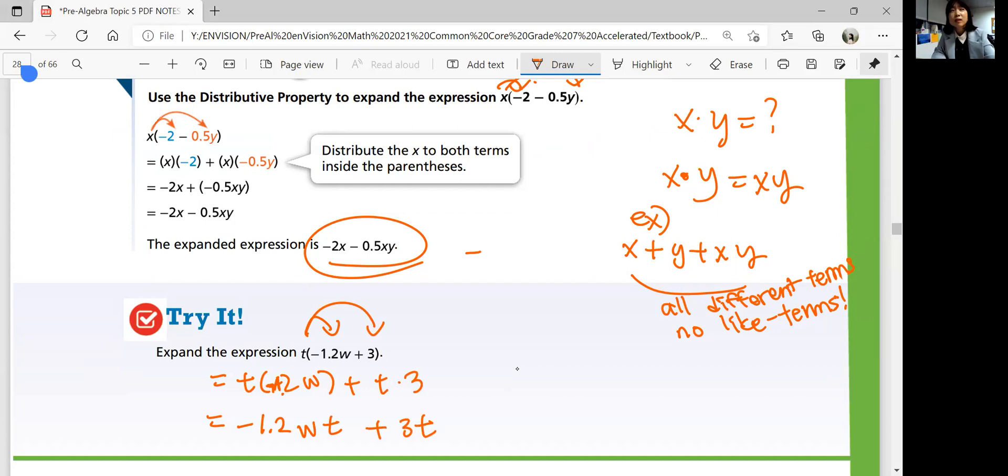Wait, alphabetically is w before t? s-t, s-t-u... no. So technically, it's better to write your variables in alphabetical order if your term has more than one variable. So let's try to practice that.